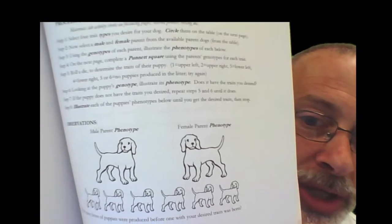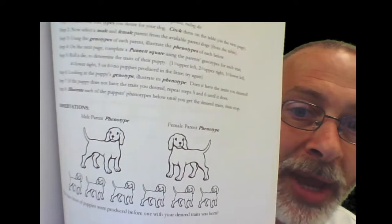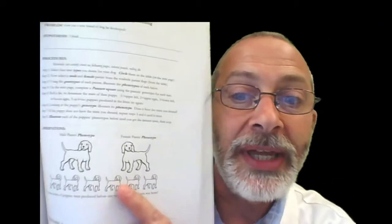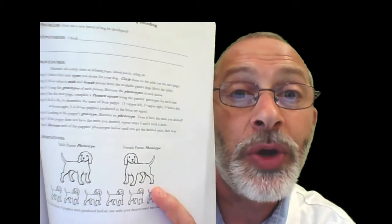Now step three says using the genotypes of each parent, illustrate the phenotypes of each below. So you have the picture here on this page of your male parent and your female parent, and you are to illustrate the phenotypes.